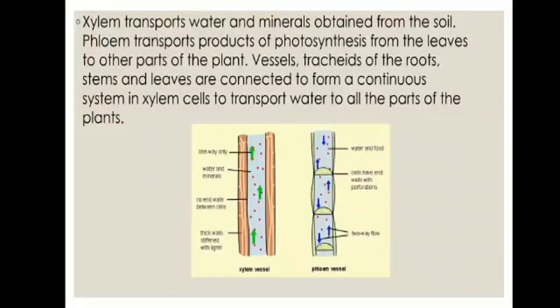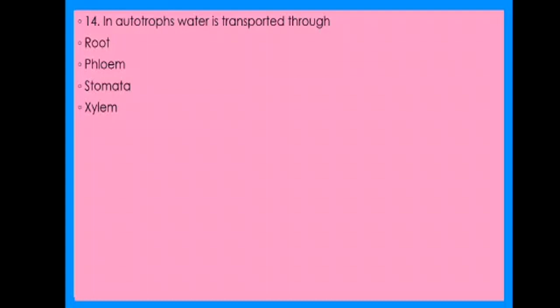Next concept regarding xylem: xylem transports water and minerals obtained from the soil, while phloem transports products of photosynthesis from the leaves to other parts of the plant. Vessels and tracheids of the roots, stem, and leaves are connected to form a continuous system in xylem cells to transport water to all parts of the plant. In the diagram you can see both the xylem and phloem vessels. Fourteenth question: In autotrophs — which are plants — water is transported through roots, phloem, stomata, or xylem? The right option is xylem.